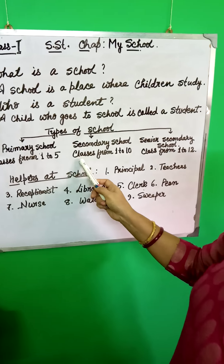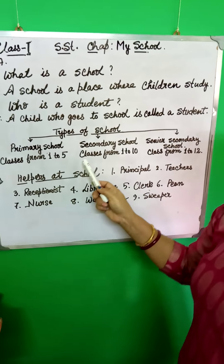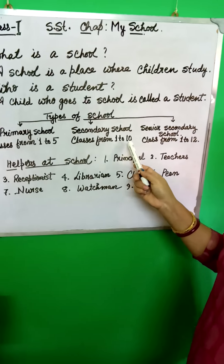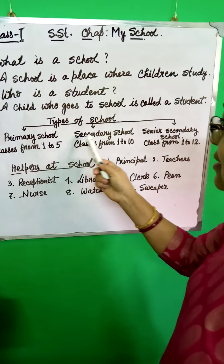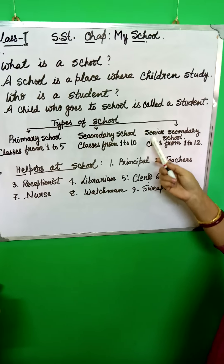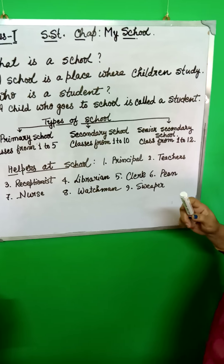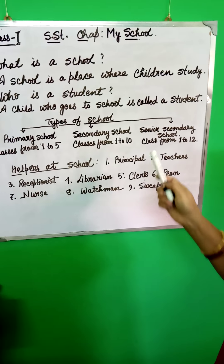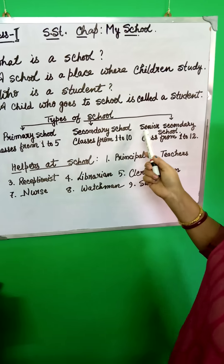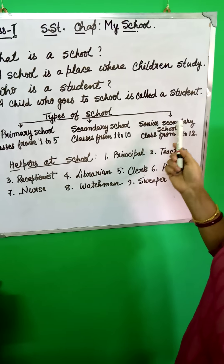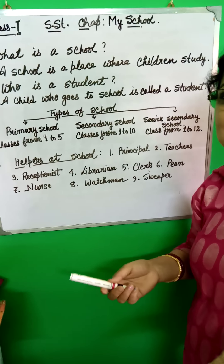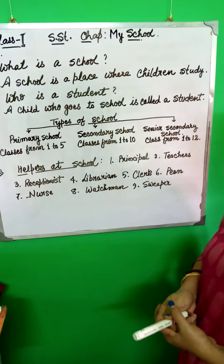Then secondary school: the school which has classes from 1 to 10 is called a secondary school. And the third one is senior secondary school — like our school. Our school is a senior secondary school.